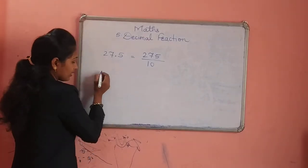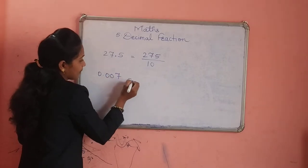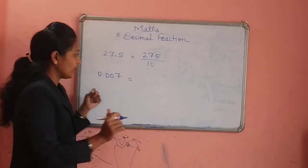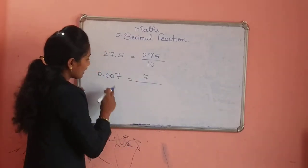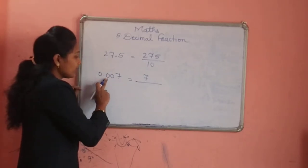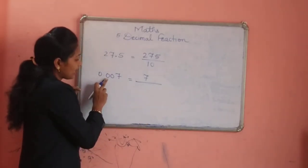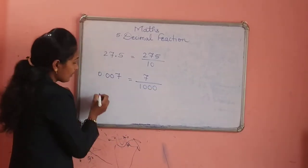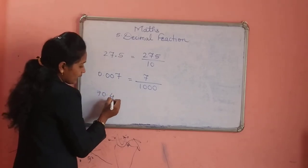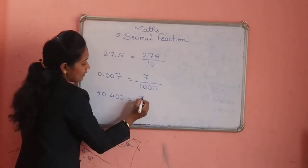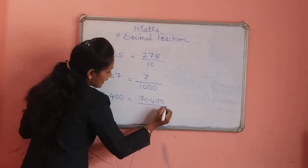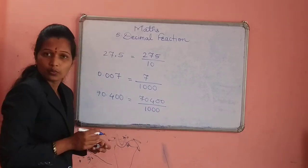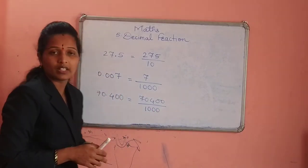Suppose the number is 0.007. We know that zeros before the number have no value, so our number is only 7. Count how many numbers are after the decimal point: 1, 2, 3 — so we give 3 zeros in front of 1, making the denominator 1000: answer is 7 divided by 1000. By the same way for 70.400: write the number 70400, and after the decimal point there are 3 numbers, so give 3 zeros in front of 1 for the denominator.